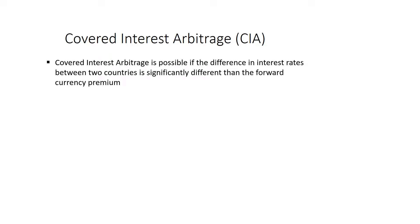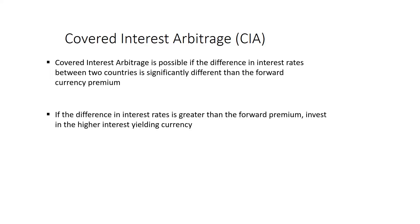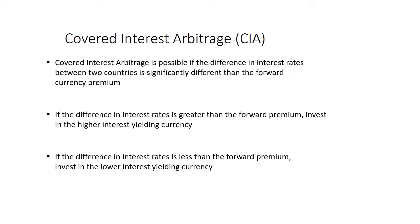More specifically, it's possible if the difference in interest rates between two countries is significantly different than the forward currency premium. So if the difference in interest rates is greater than the forward premium, you want to invest in the higher yielding currency. However, if the difference in interest rates is less than the forward premium, then you want to invest in the lower yielding currency.